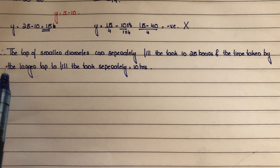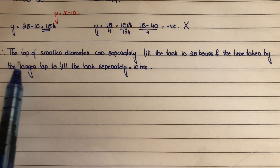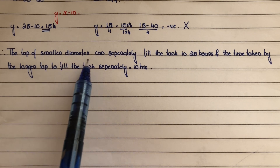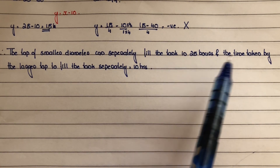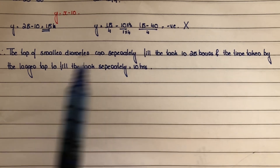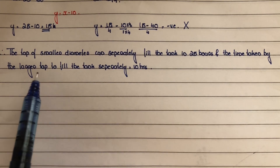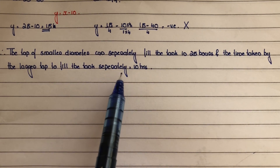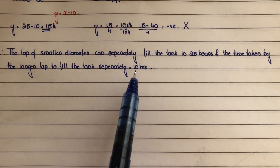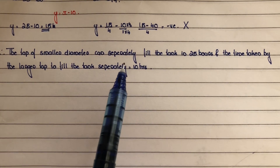Therefore, the tap of smaller diameter can separately fill the tank in 25 hours and the time taken by the larger tap to fill the tank separately is equal to 15 hours.